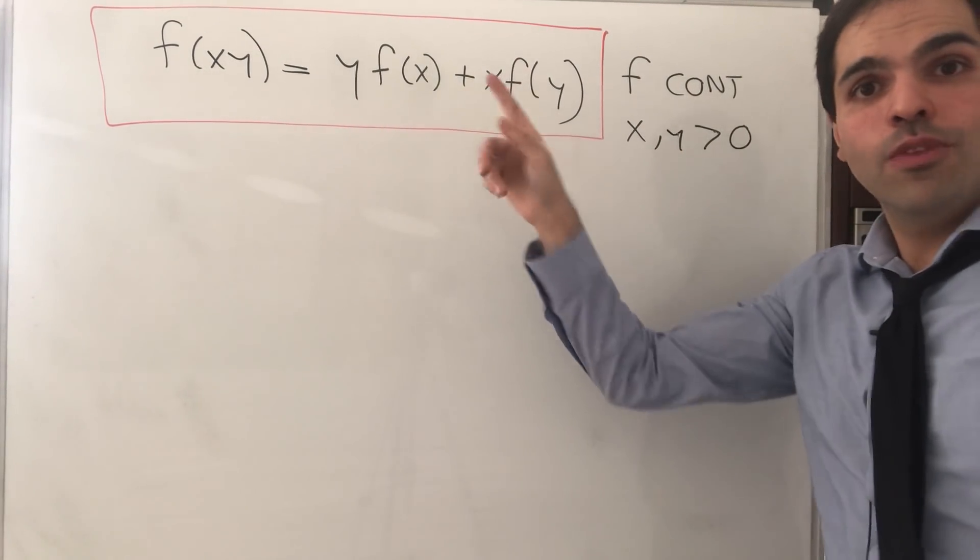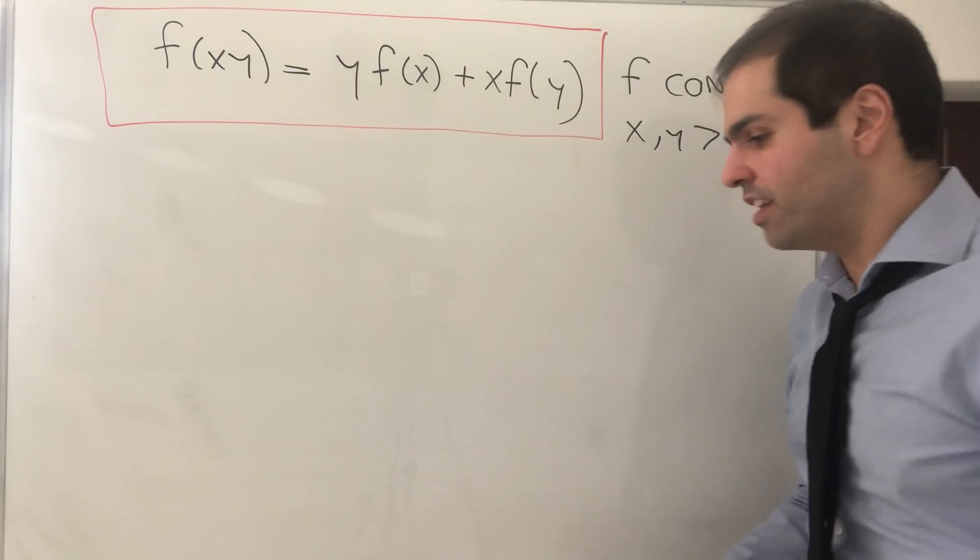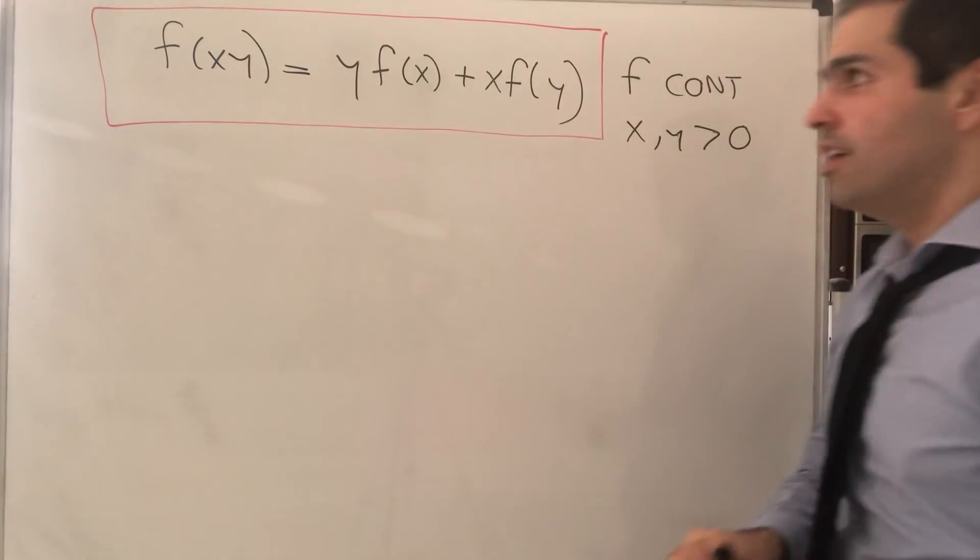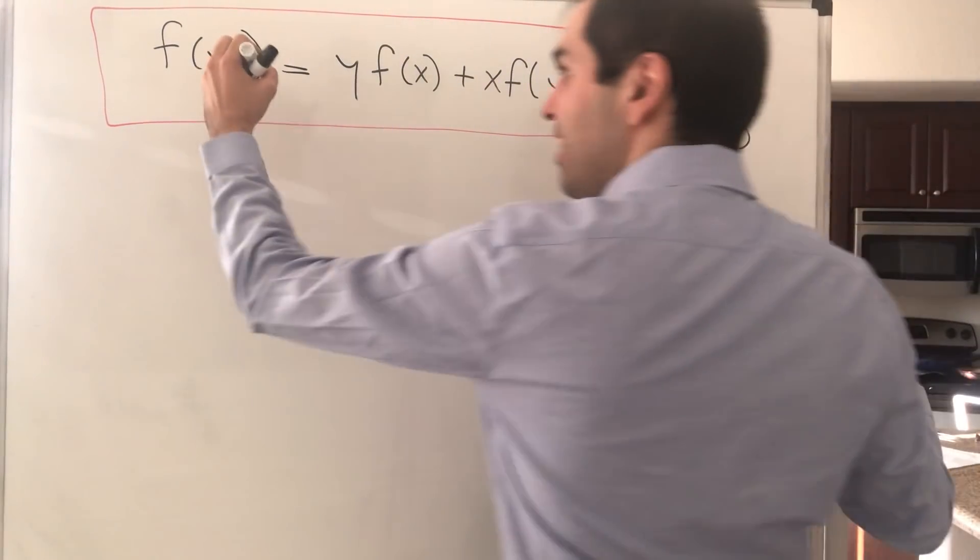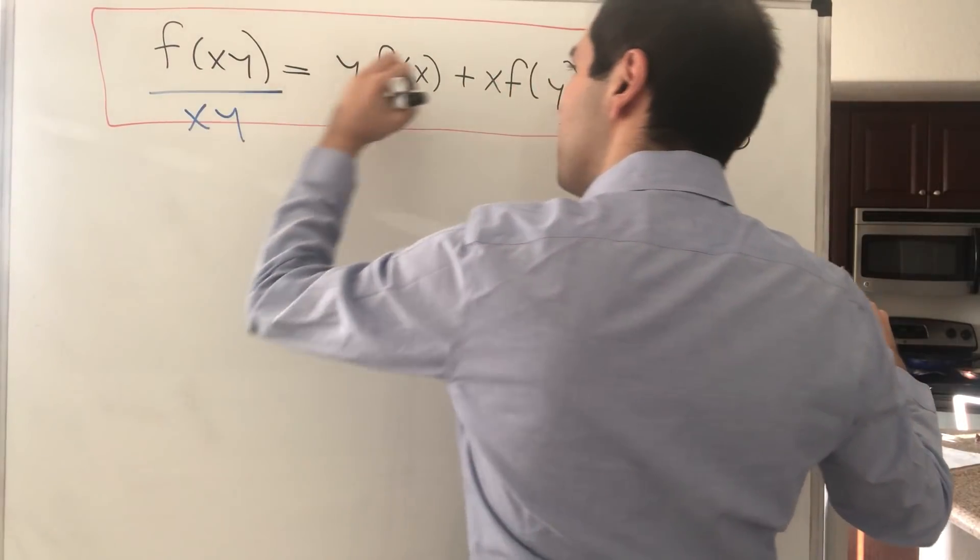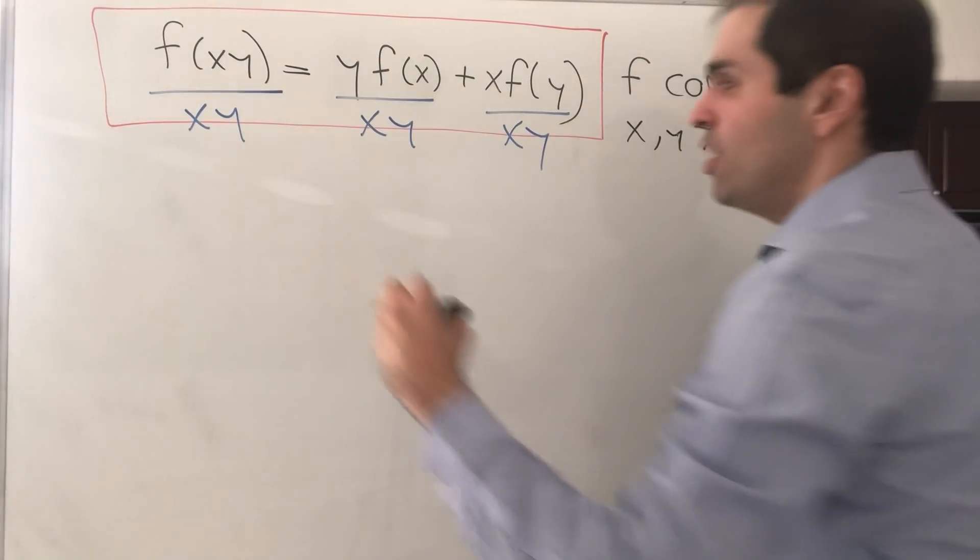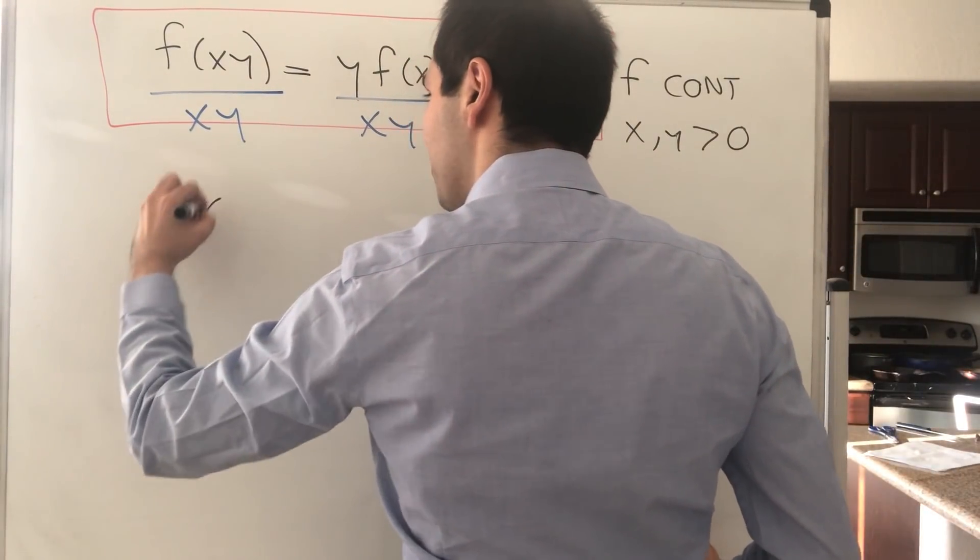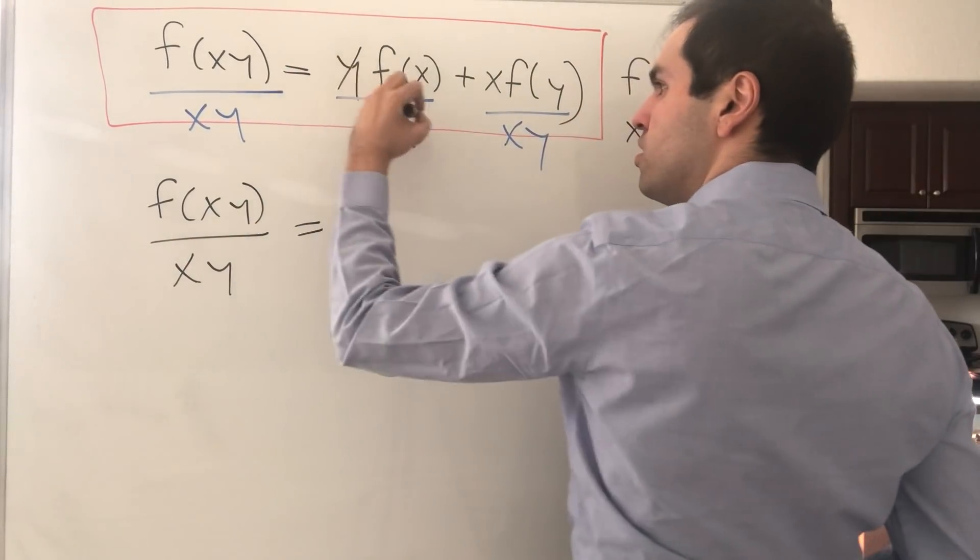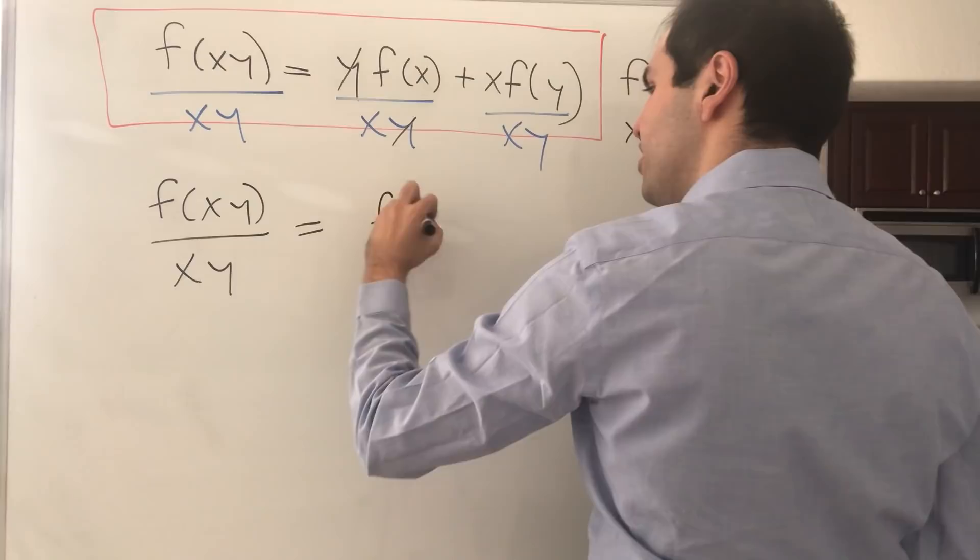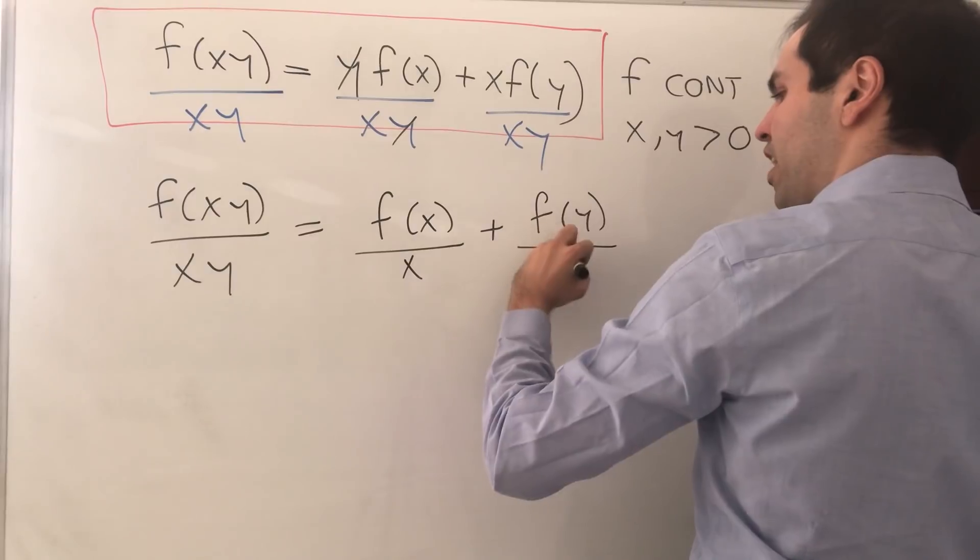The way we do this is we simply take this equation and transform it into one that's more familiar. In particular, consider the following ingenious trick: let's divide this by xy, xy, and xy. Then what we get is f(xy)/xy equals—this y cancels out—f(x)/x + f(y)/y.